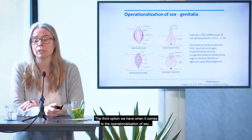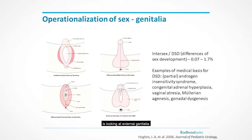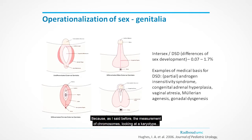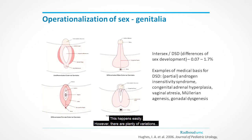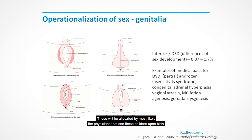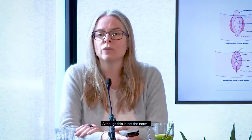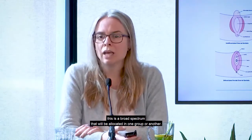The third option for operationalizing sex is looking at external genitalia — probably the way sex at birth has been defined in most of us, since measurement of chromosomes or hormones is not routinely done. In cases where there is a relatively clear expression of external genitalia, allocation into masculine or feminine categories happens easily. However, there are a large range of variations — for example, a large clitoris or a very small penis — that cannot be directly allocated and will be assigned by physicians at birth.